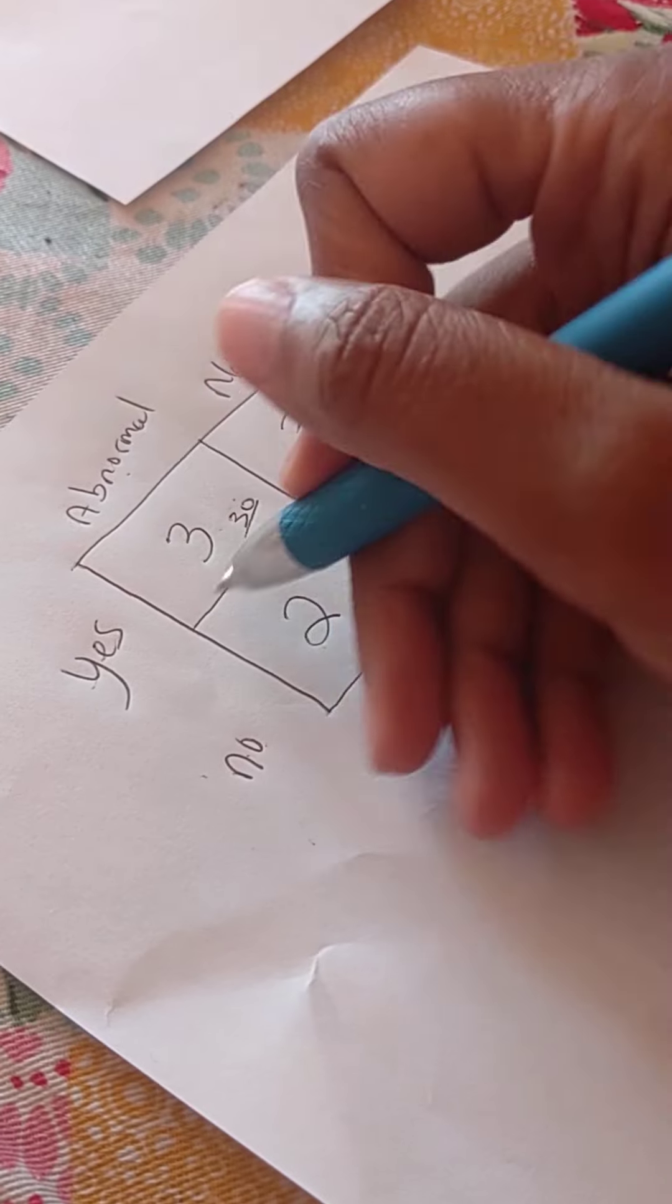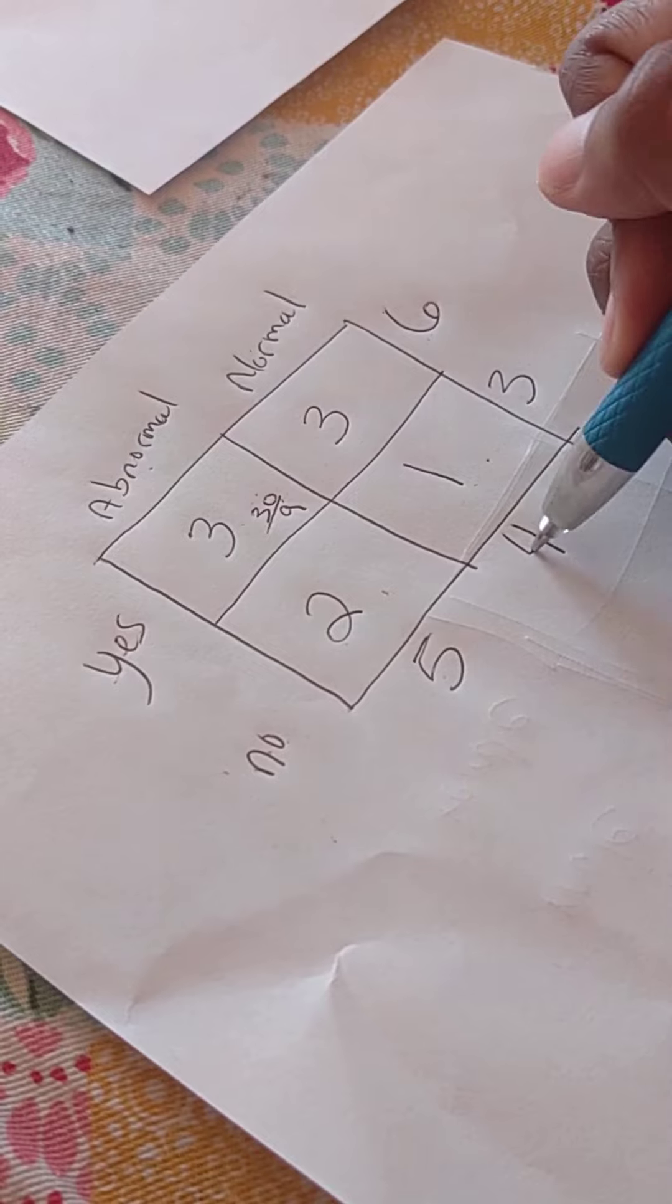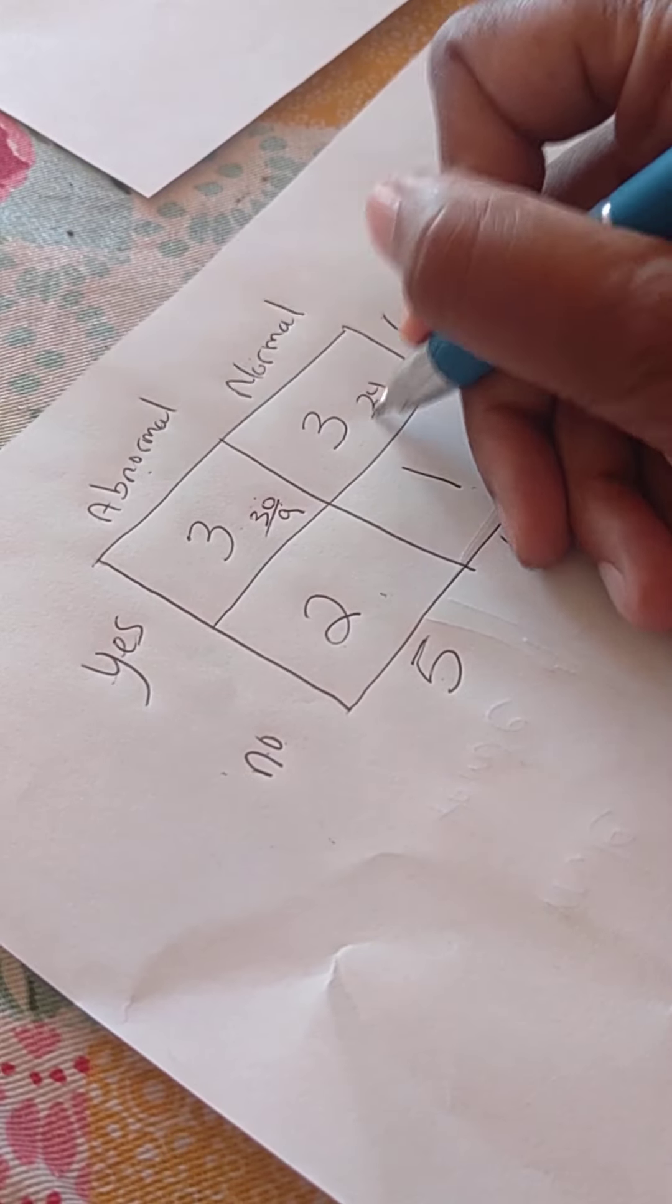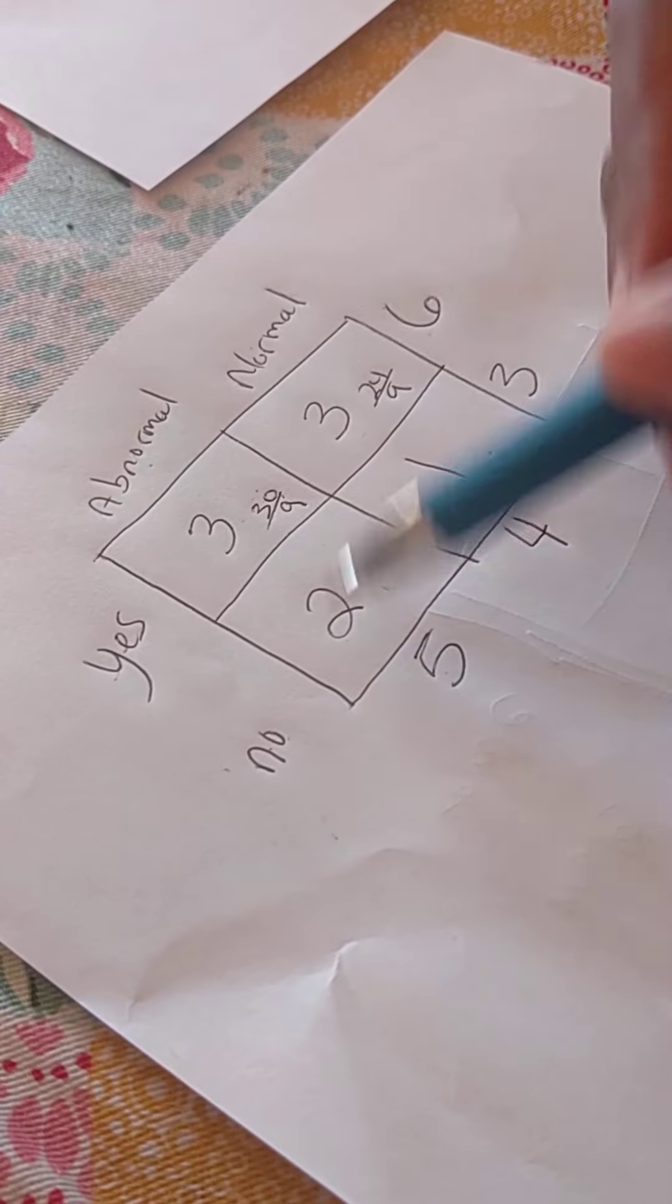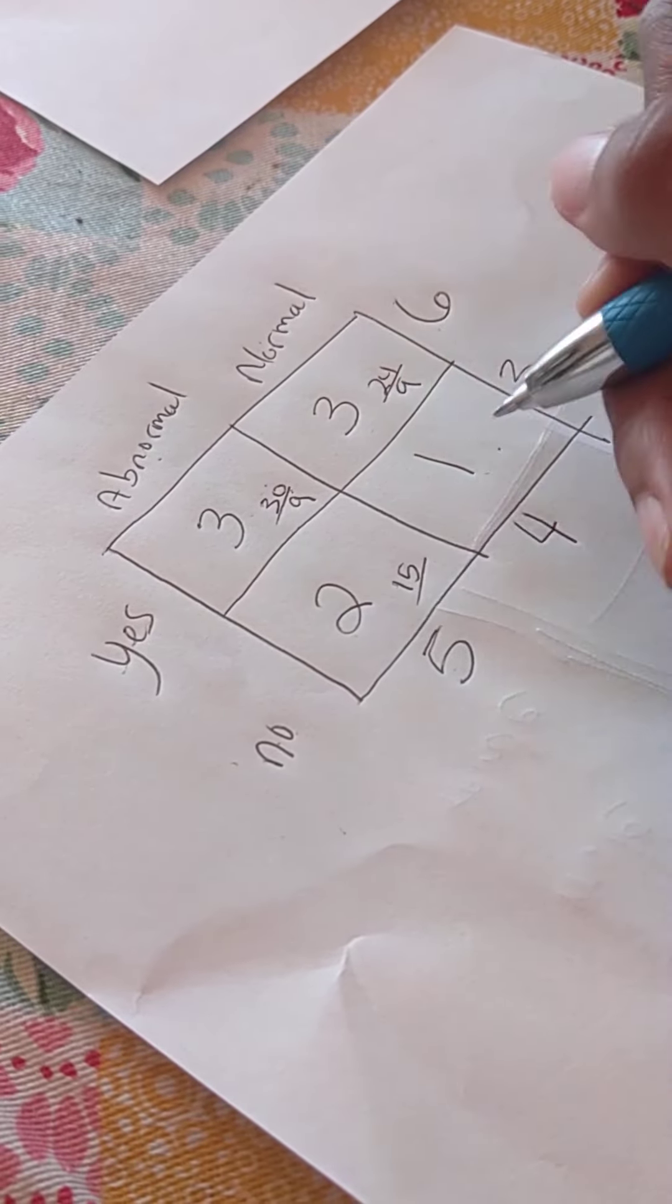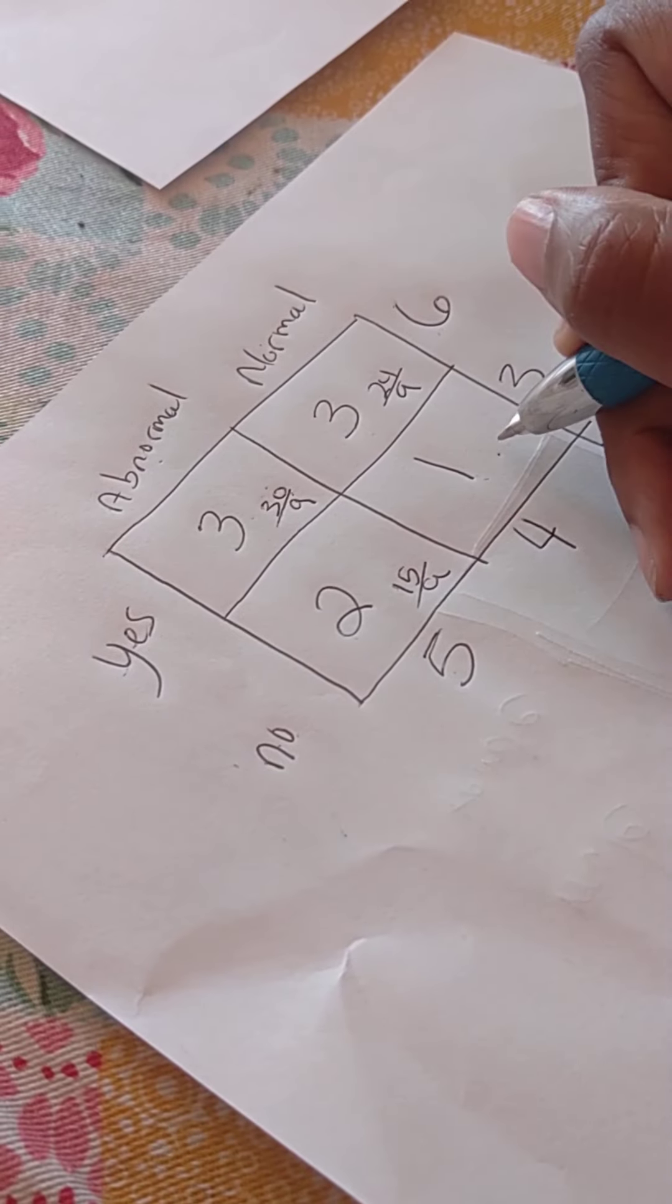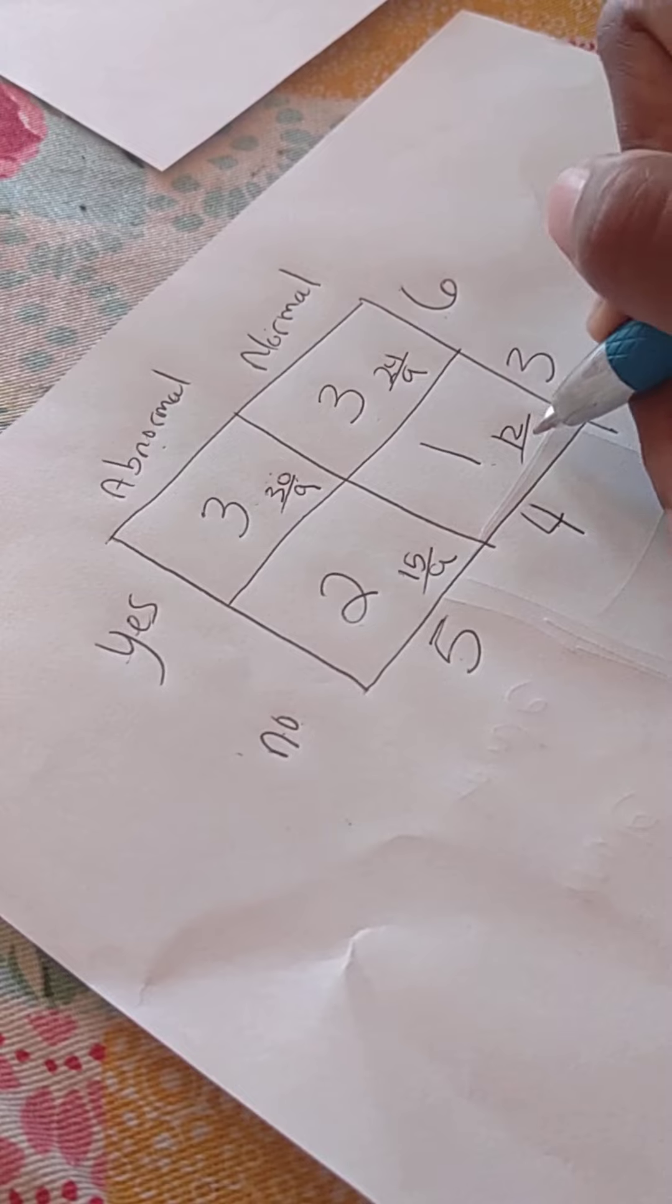So, 9, right? So, 30 over 9. This one is going to be 24 over 9. I just want to check my numbers. 15 over 9. And this is 12 over 9.